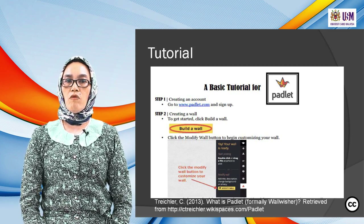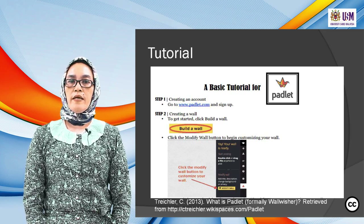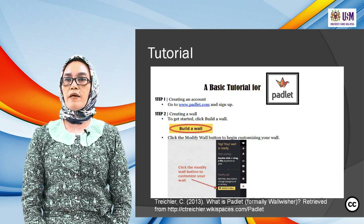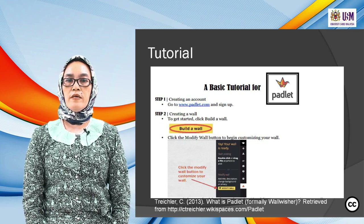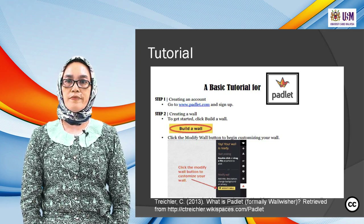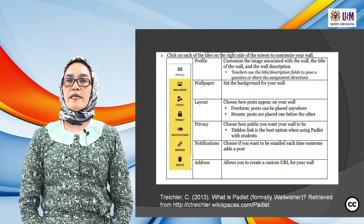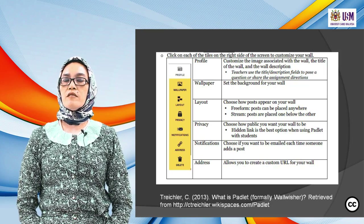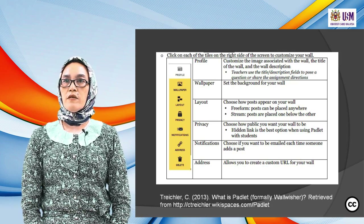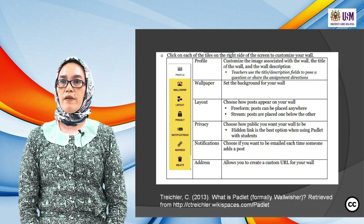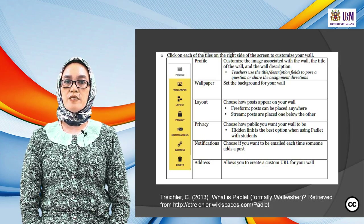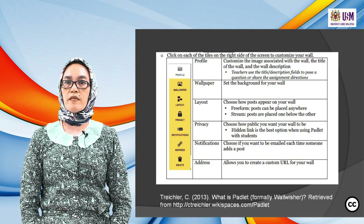Click the modify wall button to begin customizing your wall. Click on each tile on the right side of the screen to customize. In your wall you have profile, wallpaper, layout, privacy, notifications, and address on the side.